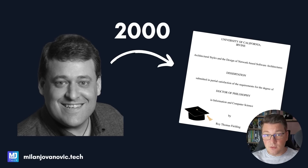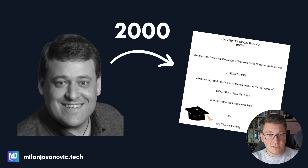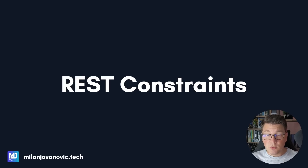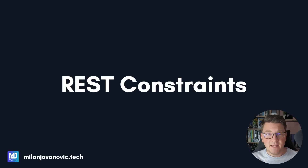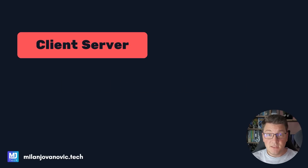Let's discuss the original meaning of REST, and then we're going to talk about the more modern approach to RESTful APIs. There are six core principles that are needed to build a RESTful API, called the REST constraints. I'm going to walk you through them one by one.